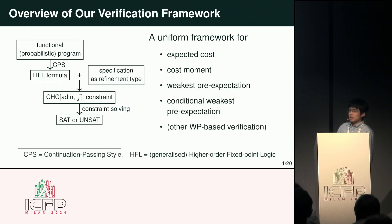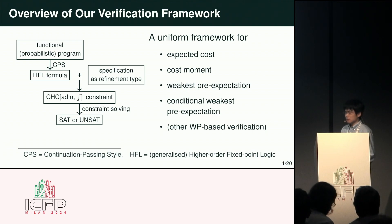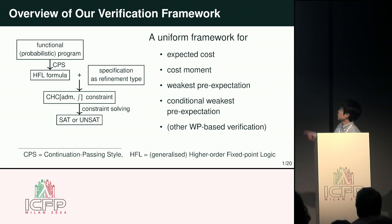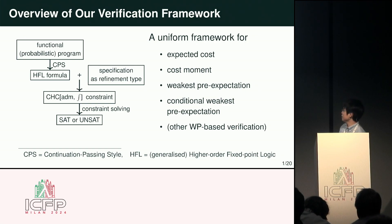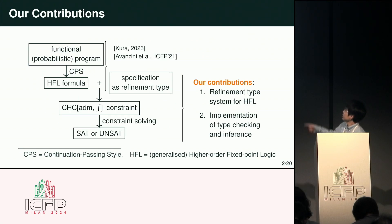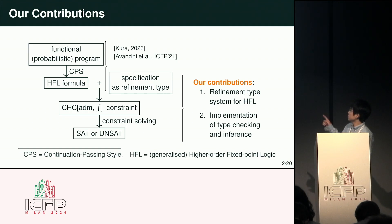This talk is about an automated verification framework for higher-order probabilistic programs, which can verify several properties of probabilistic programs in a uniform way. The workflow is shown in this diagram. When I mention CPS, it means continuation passing style — not a cyber-physical system from the previous talk. The top-left part of the diagram is based on existing work, but the other parts are our new development. Specifically, we propose a new refinement type system for the generalized higher-order fixed-point logic, and we also propose an algorithm for type-checking and inference.